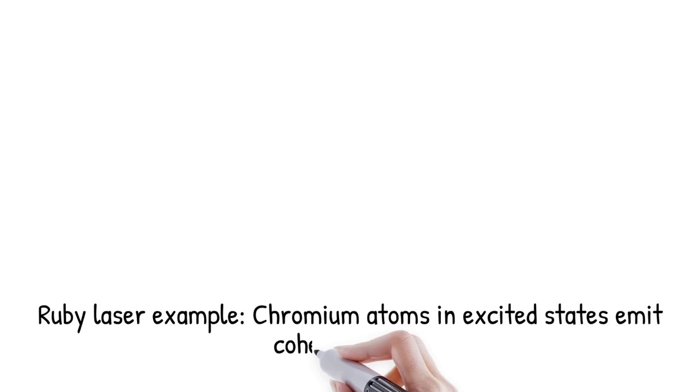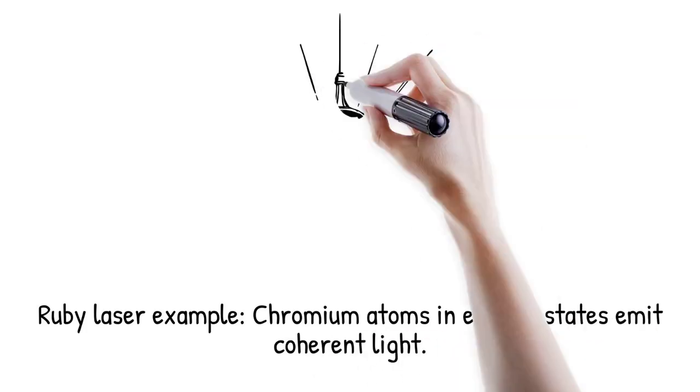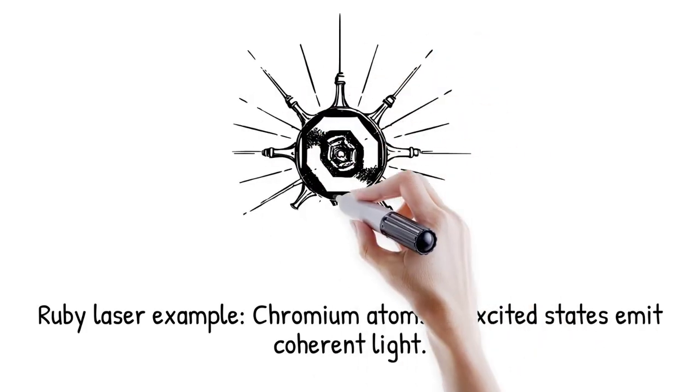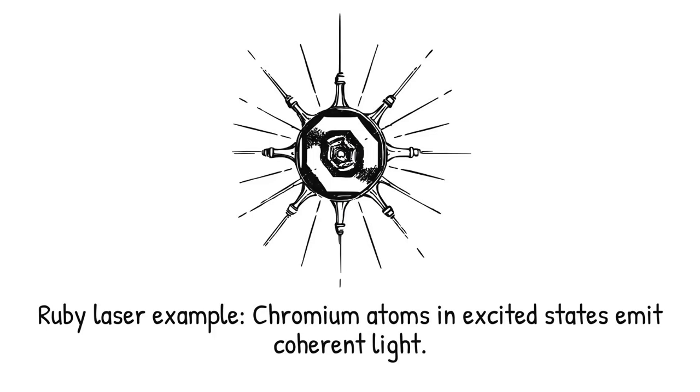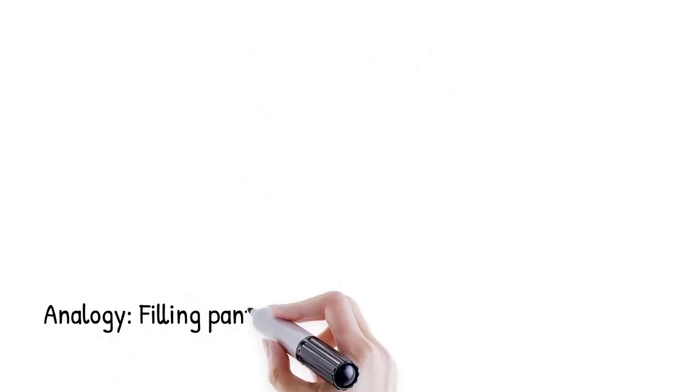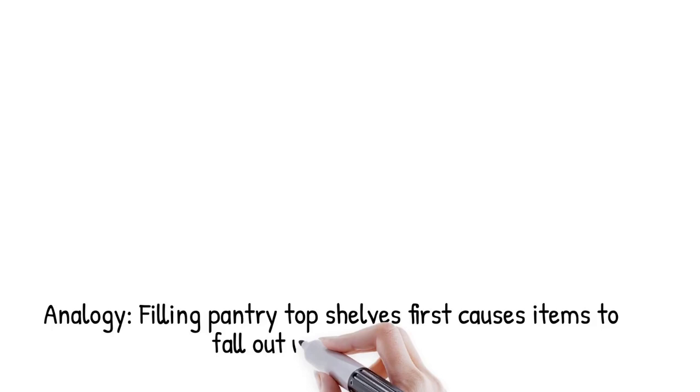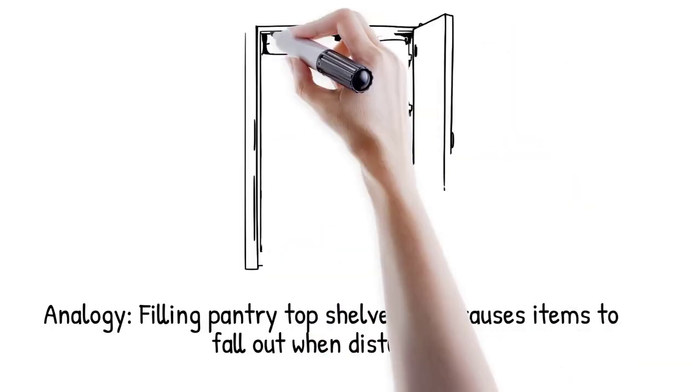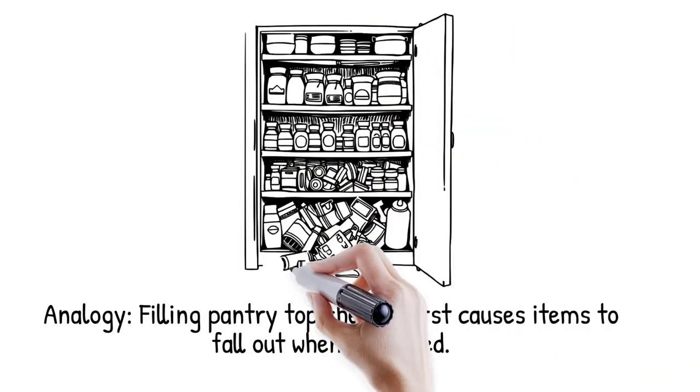In a ruby laser, light continually excites chromium atoms so that more sit in an excited state than the ground state, enabling a burst of coherent light when stimulated, like filling the top shelves of a pantry before the bottom ones. Once most items are up top, they tend to fall out first when a small perturbation occurs.